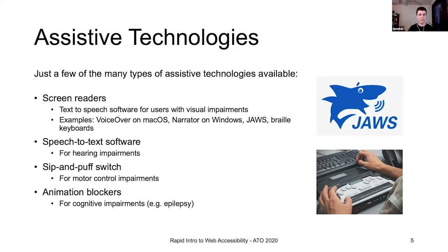So what does accessibility look like from our user's perspective? It often includes the use of assistive technologies — software or hardware that improves the experience of users with disabilities. Screen readers are probably the most well-known in the web community and the most prevalent. Most major operating systems ship with some form of screen reader, like VoiceOver on macOS and Narrator on Windows. There are also third-party options like JAWS, and even hardware versions like a braille reader.